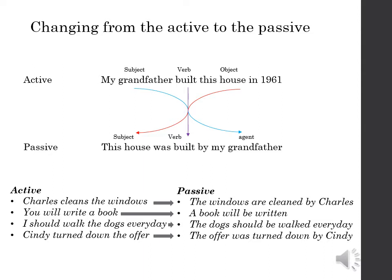When changing from active to passive: the object of the active sentence becomes the subject in the passive sentence; the active verb changes into the relevant passive form; and the subject of the active sentence becomes the agent. For example: 'My grandfather built this house in 1961' becomes 'This house was built by my grandfather.' As you can see, 'my grandfather' — the subject of the active sentence — became the agent 'by my grandfather' in the passive.